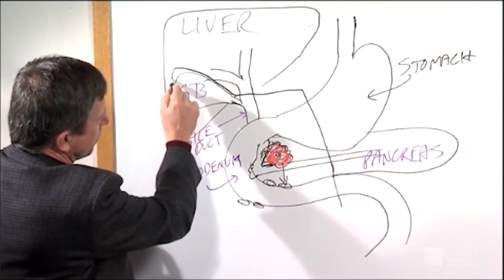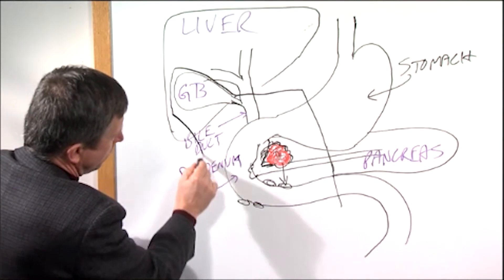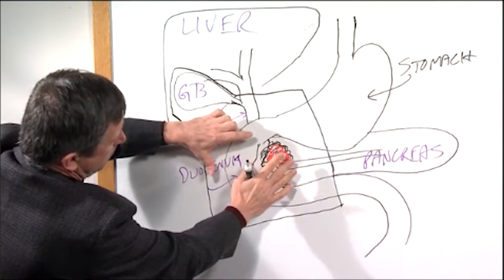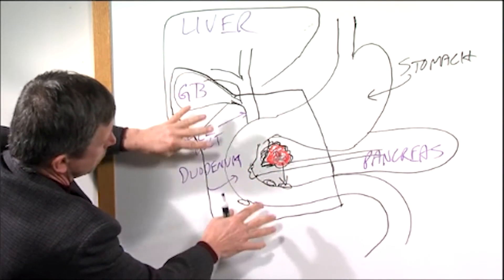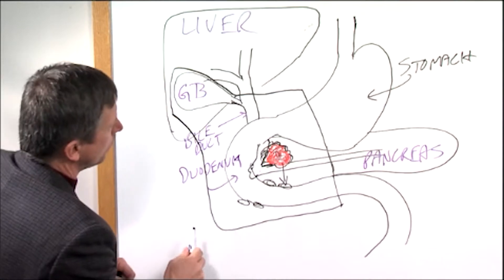The gallbladder is removed with the Whipple procedure as well. So what you see here is the head of the pancreas, the first part of the intestine, the lower bile duct, the gallbladder are all removed with the Whipple procedure.